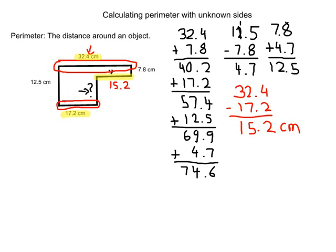Now we could add this to our perimeter, 15.2. And in the end, we have 89.8 centimeters as our perimeter.